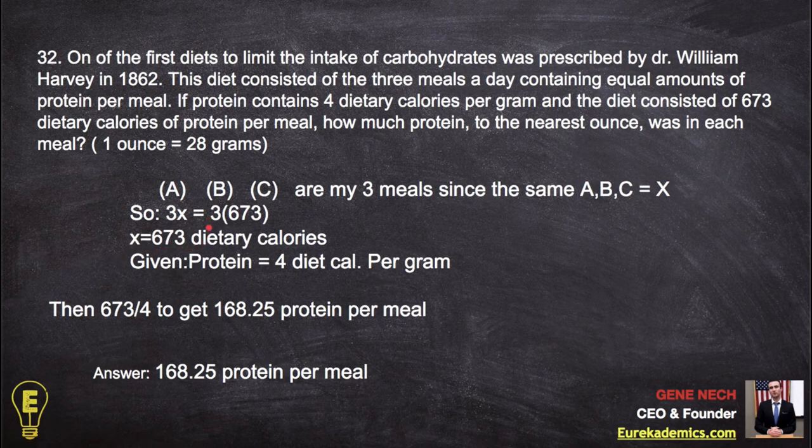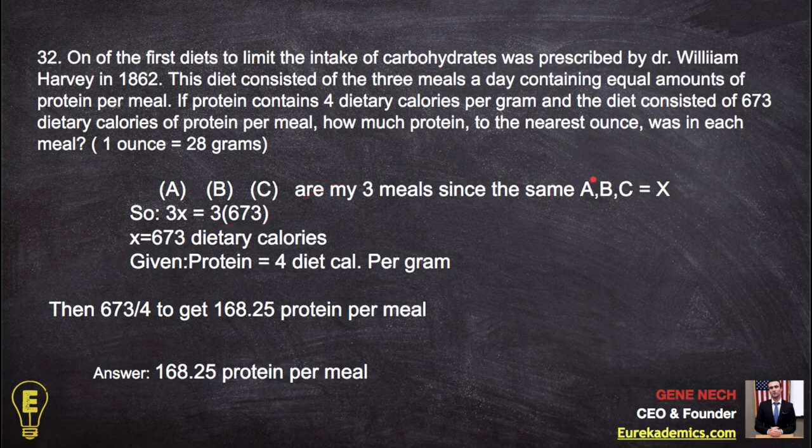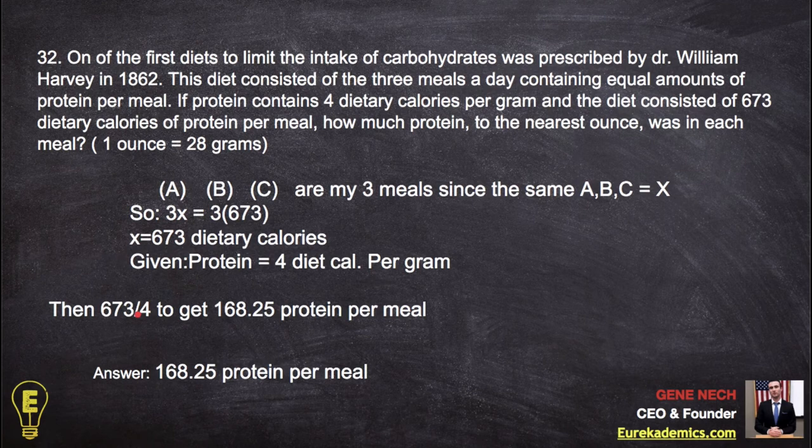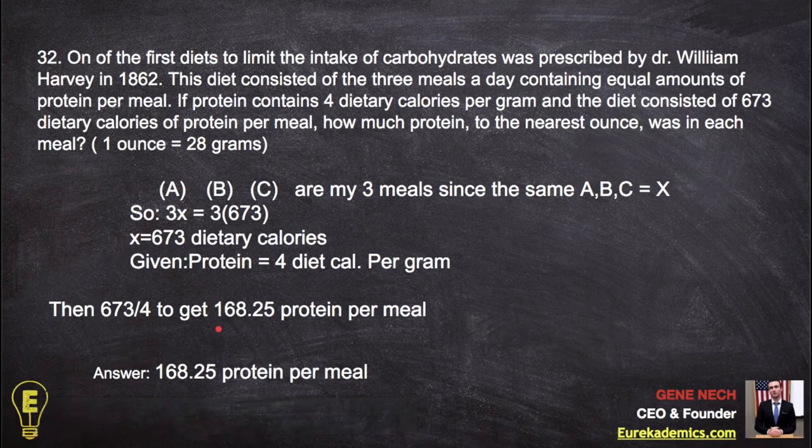Now, we're not looking for dietary calories. That's why I keep saying that. We're looking for protein. How much protein to the nearest ounce? So I go back to this. Protein equals that. So if there's four in each, we have to divide by four to get back to protein. And then you get an answer. 168.25 ounces of protein per meal.